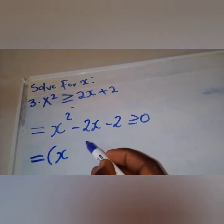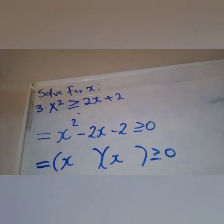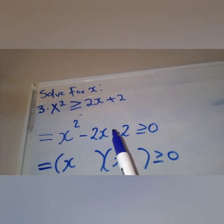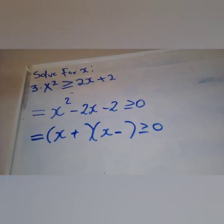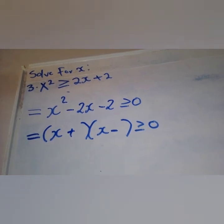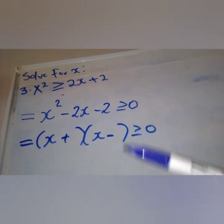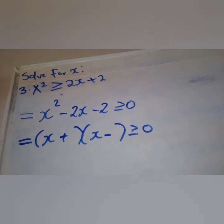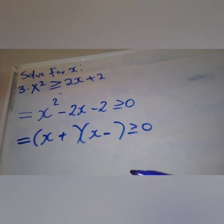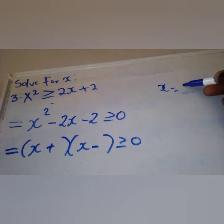We write x and x in the brackets so that multiplying gives x squared. This is a trinomial; checking the last term — it is negative, so we need different signs in the brackets. We need two numbers that when multiplied give negative two and when added or subtracted give negative two. If you cannot find such numbers, use the quadratic formula from the first video.